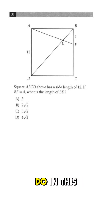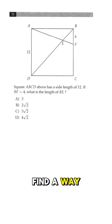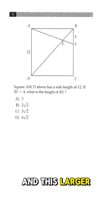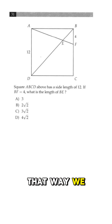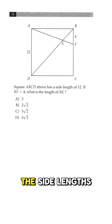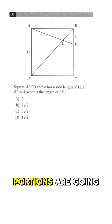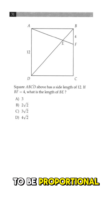The first thing we should do in this question is try to find a way to prove this smaller and this larger triangle similar. That way, we can show that the side lengths of the diagonal portions are going to be proportional.